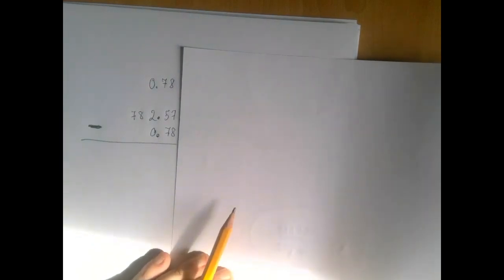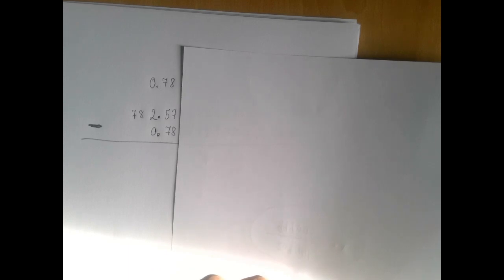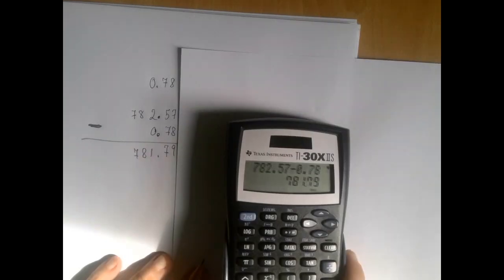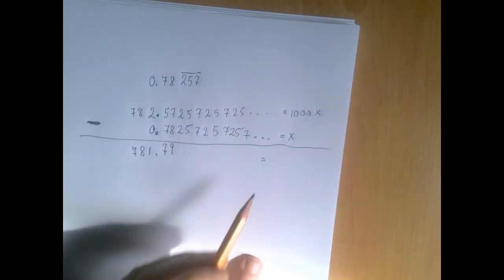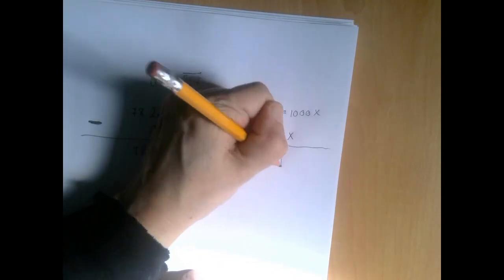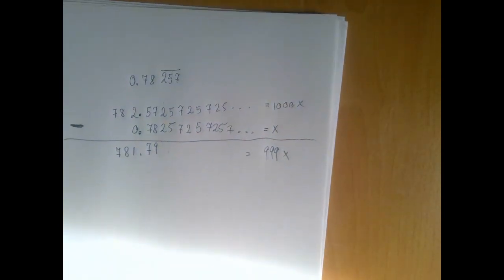So this is what you need to enter into your calculator: 782.57 minus 0.78. So we're in good shape. And here, when we subtract x from a thousand x, we're going to have 999x. And notice what happened.